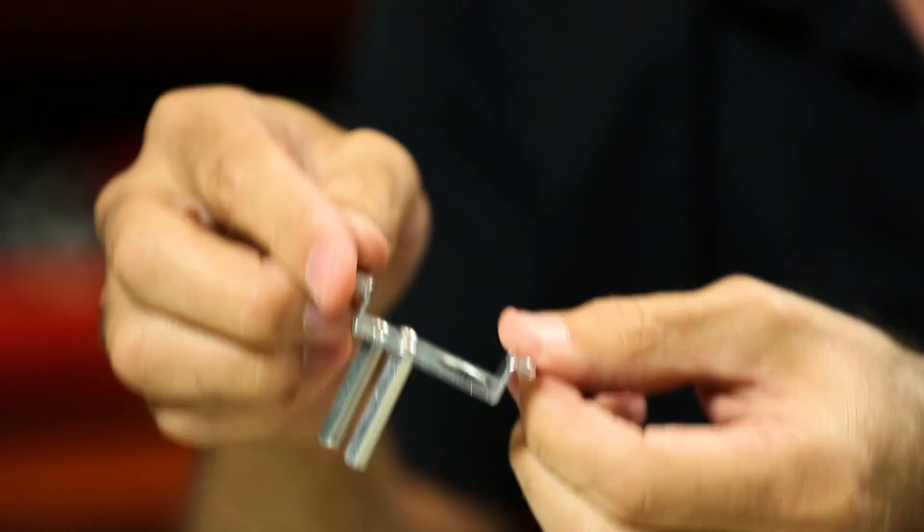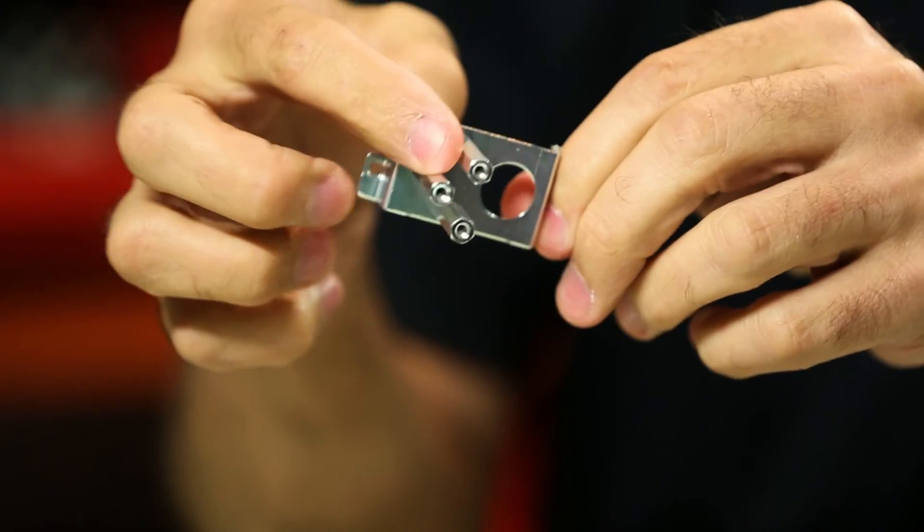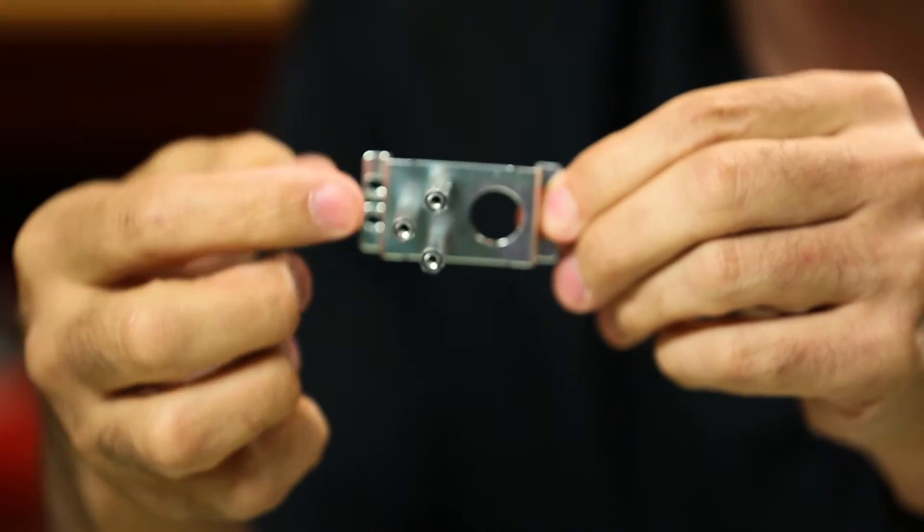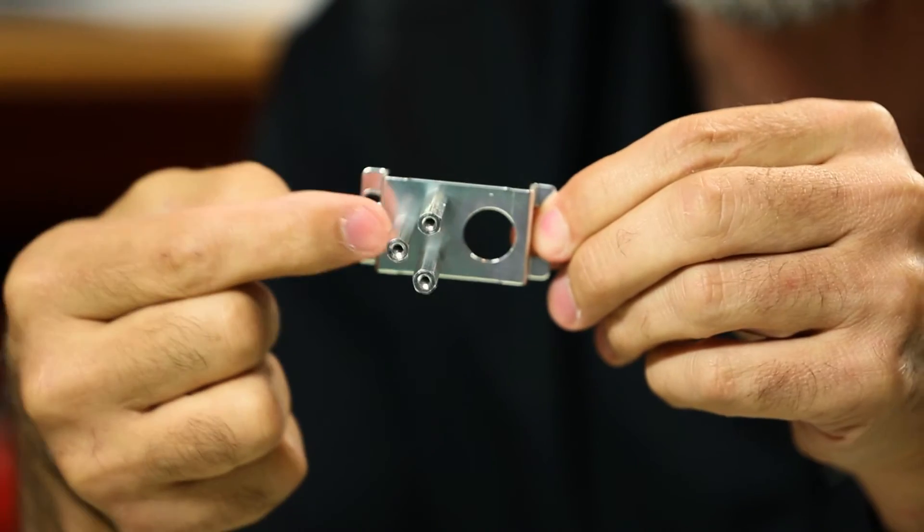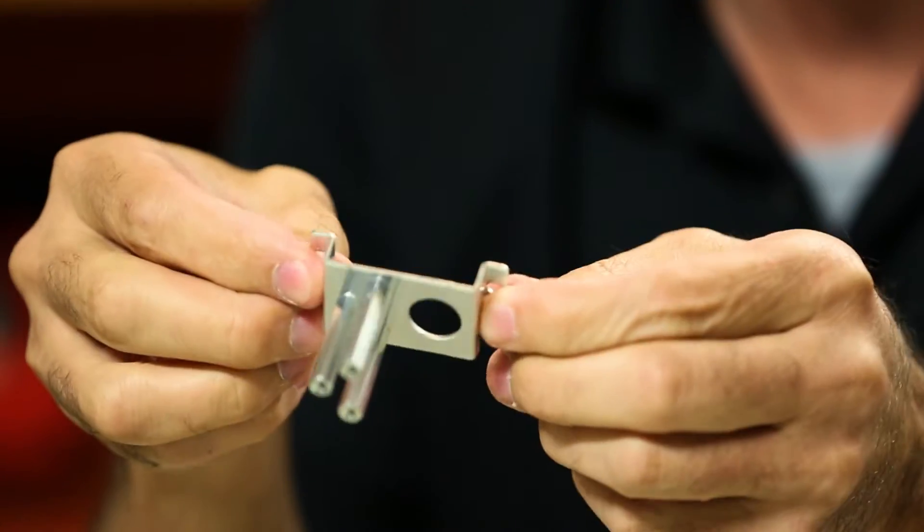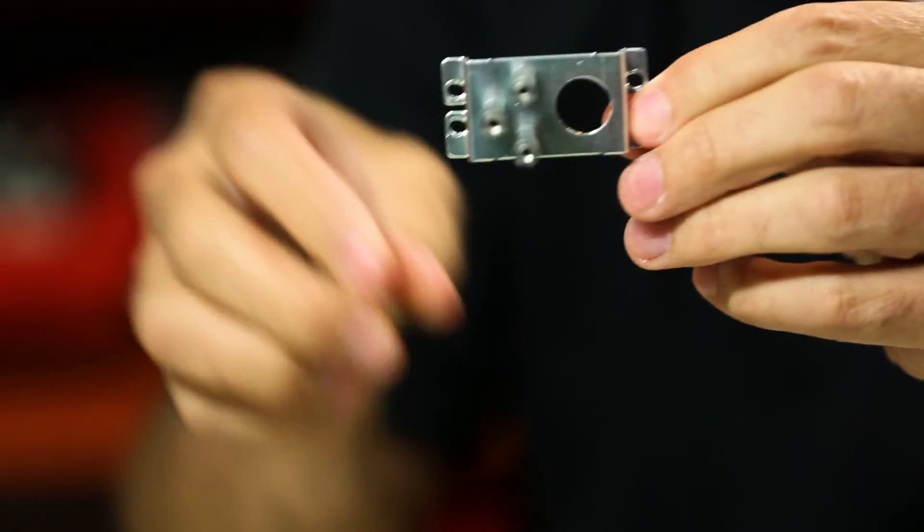Now you can see that I have in this particular mount standoffs mounted. These are 32 millimeter standoffs. I can vary the length on how far this sets away from the channel by just changing the standoffs. But for this one I went ahead and put 32s.